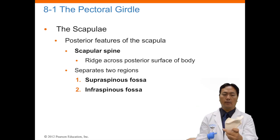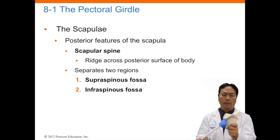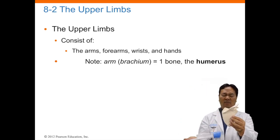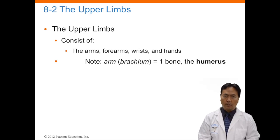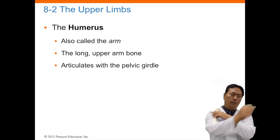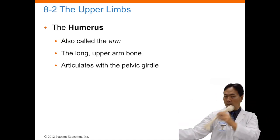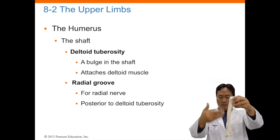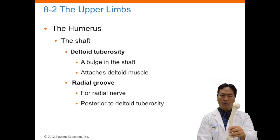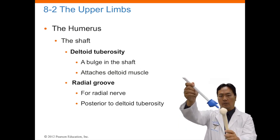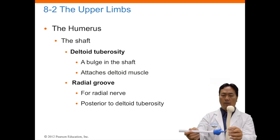The scapular spine is the ridge that separates two regions — the supraspinous and infraspinous fossae above and below. The upper limb consists of your arms, forearms, wrists, and hands. The humerus is your upper arm bone and it articulates in the shoulder girdle. It has a shaft, which is the long part of the bone, and a deltoid tuberosity, which is the attachment point for your deltoid muscle. The radial groove is important because the radial nerve inserts through there.